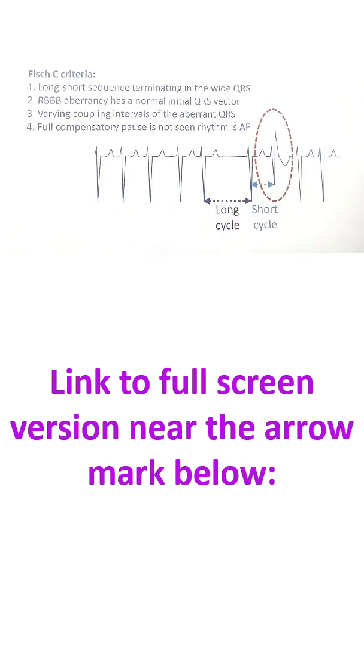Ashman phenomenon is an aberrant conduction which occurs in atrial fibrillation. You can see that no P waves have been shown in this case. Very fine fibrillary waves may be considered, but this is a diagram, not an actual electrocardiogram.